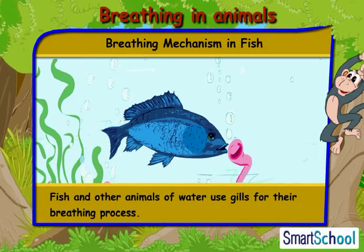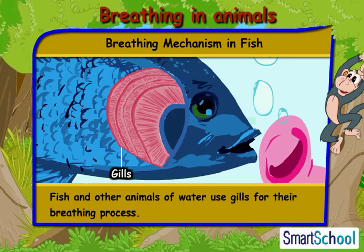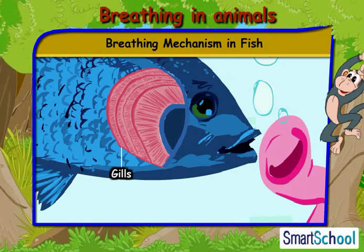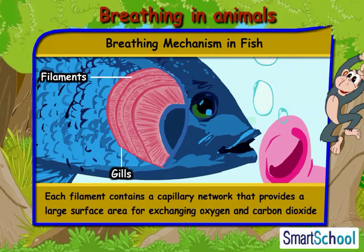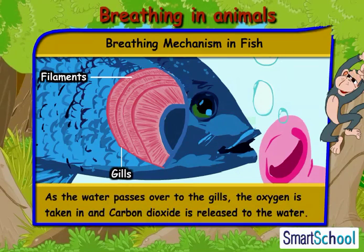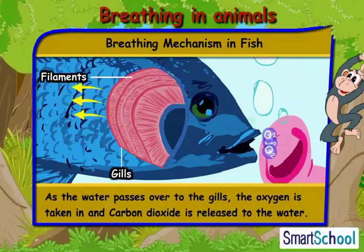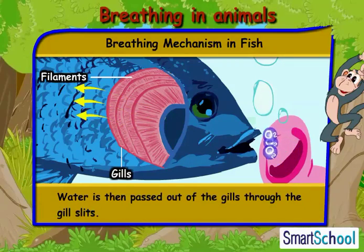Fish and other aquatic animals use gills for their breathing process. Gills consist of thread-like structures called filaments. Each filament contains a capillary network that provides a large surface area for exchanging oxygen and carbon dioxide. As water passes over the gills, oxygen is taken in and carbon dioxide is released to the water. Water is then passed out of the gills through the gill slits.